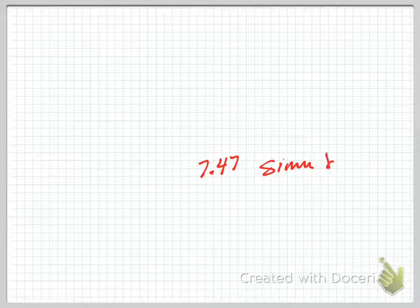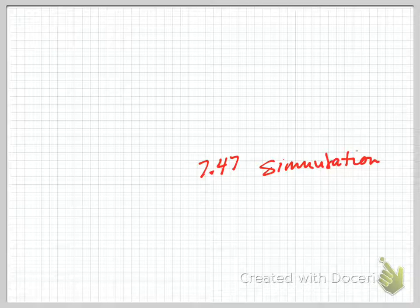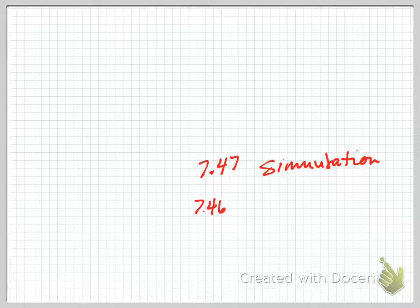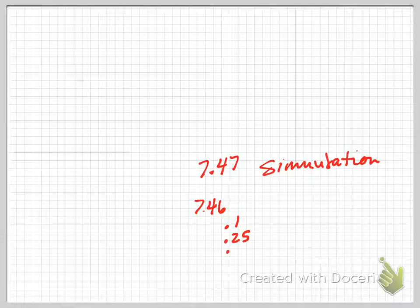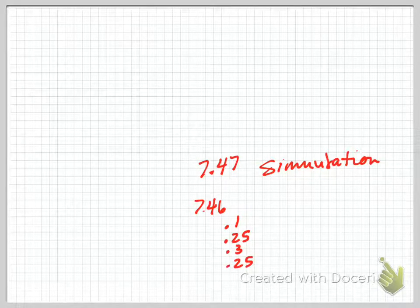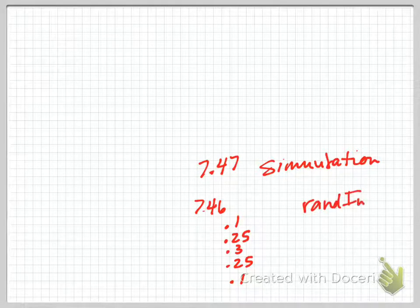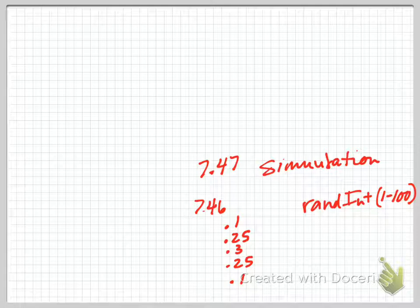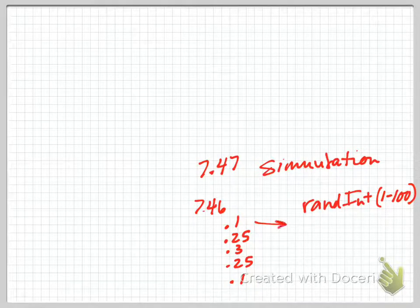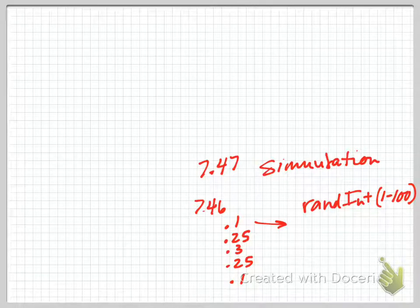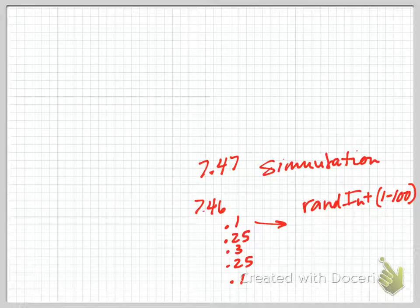So here's 7.47 the simulation. When we're in 7.46 we had probabilities of 0.1, 0.25, 0.3, 0.25, 0.1. And I've said always that when you have probabilities that you need to simulate then you are going to do random integer on your calculator, and we're going to do 1 to 100, because we have 100% that we're trying to break down and then you just have to assign your probabilities. So 1 to 10, 1, 2, 3, 4, 5, 6, 7, 8, 9, 10, that would be 10% of the numbers.